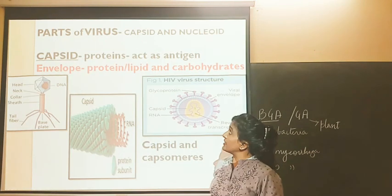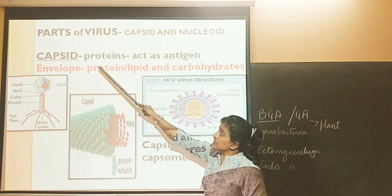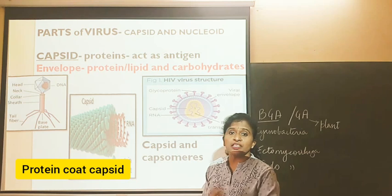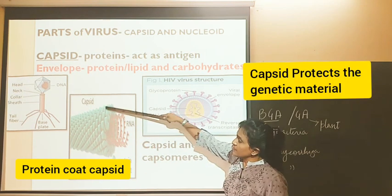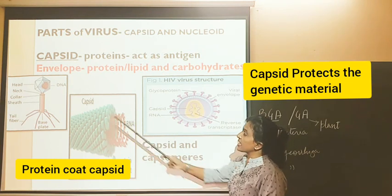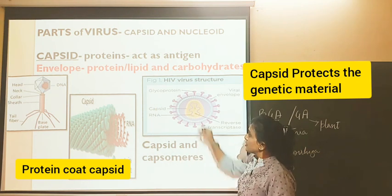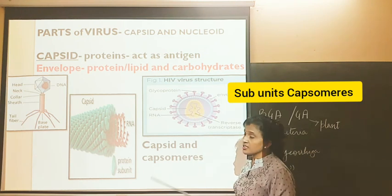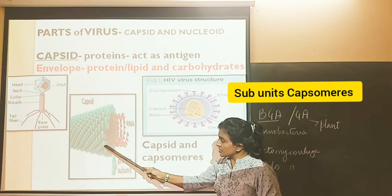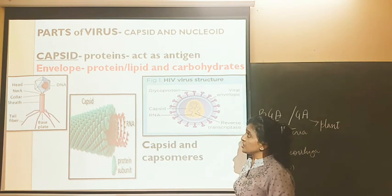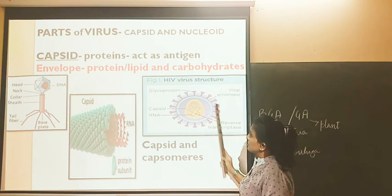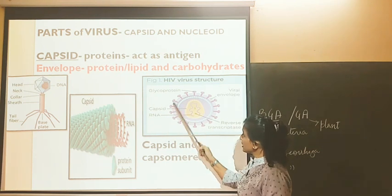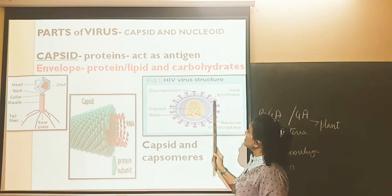There are two parts of a virus: capsid and nucleic acid. The capsid is the structure made up of protein and acts as an antigen. The capsid surrounds the genetic material and is made up of small round structures called capsomeres. Some binal species have an envelope around the capsid made up of protein, lipid, or carbohydrates, and the envelope has spikes.